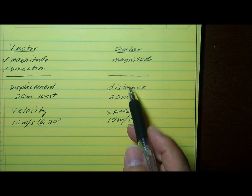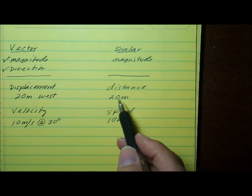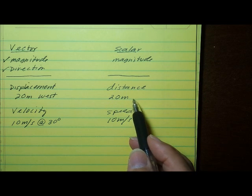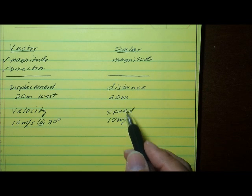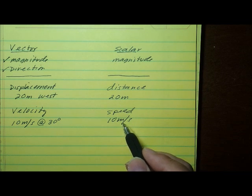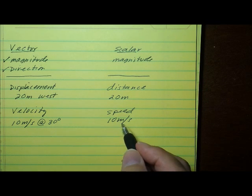An example of a scalar measurement would be something like distance. You notice that distance does not have a direction with it. A speed is a scalar quantity. A speedometer in an automobile tells you speed. It doesn't tell you velocity. It tells you speed because it doesn't give you a direction.